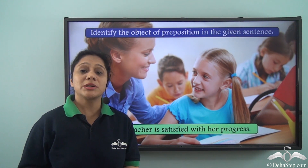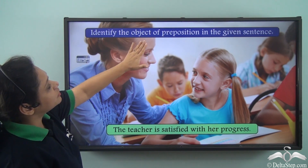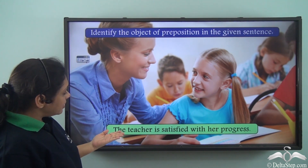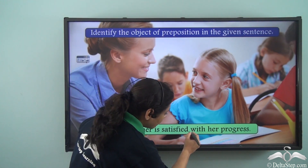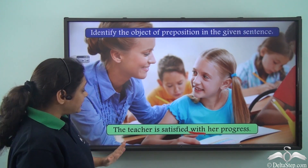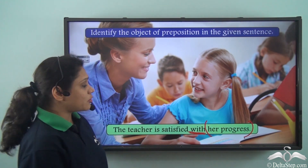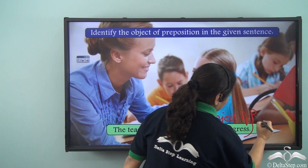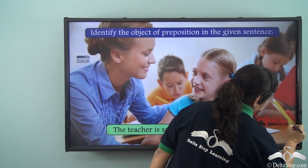Now that we have learned what objects of preposition are, let us quickly do this exercise: identify the object of preposition in the given sentence. The sentence is: 'The teacher is satisfied with her progress.' What is the preposition here? 'With.' The teacher is satisfied with what? Her progress. So 'her progress' is the object of the preposition in this sentence.